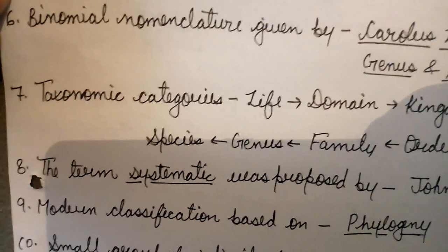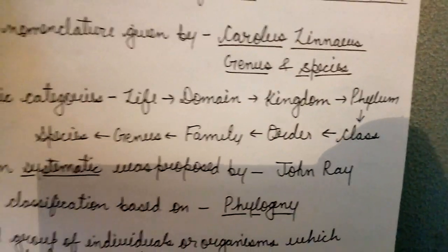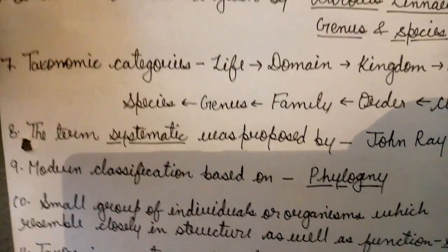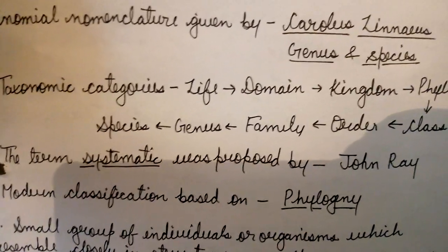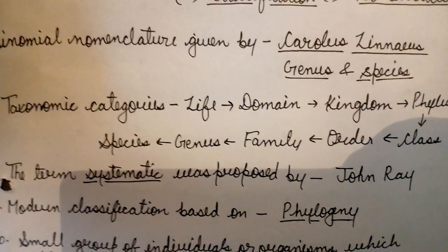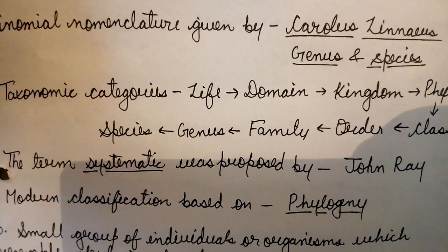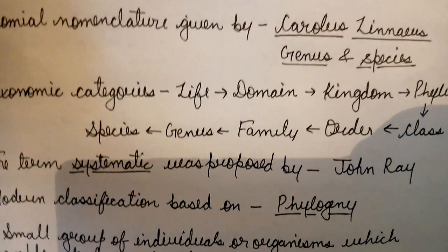The term systematics was proposed by John Ray. Modern classification is based on phylogeny. Phylogeny is the historical events and development of any organism.